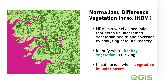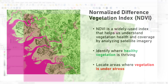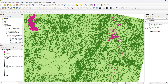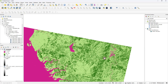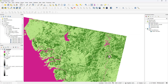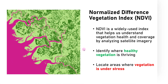NDVI is a widely used index that helps us understand vegetation health and coverage by analyzing satellite imagery. It stands for Normalized Difference Vegetation Index, which is a numerical indicator that uses specific bands of satellite imagery to assess the health of vegetation — identifying areas where healthy vegetation is thriving and areas where vegetation is under stress.